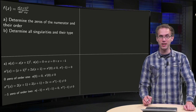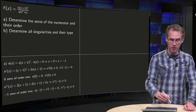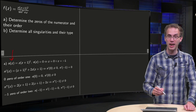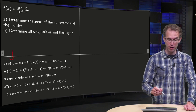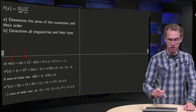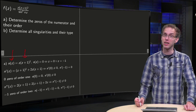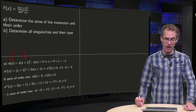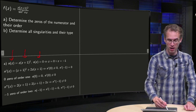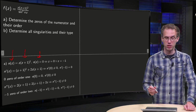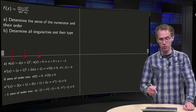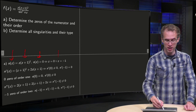How can we find the zeros? We define the numerator as N of z equals z times (z plus 1) squared. We can solve N of z equals zero and the solutions are either z equals zero or z equals minus 1.